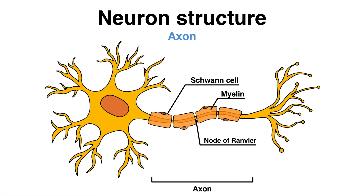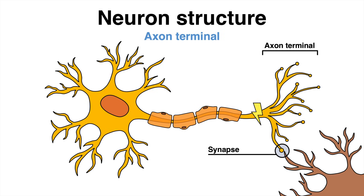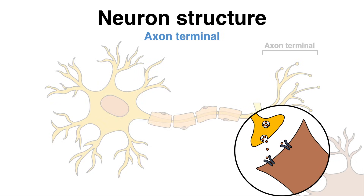Finally, the action potential reaches the axon terminal, which is the end of the axon that forms a synapse. The synapse is the junction between the axon terminal of one neuron and the dendrites or cell body of another neuron or target cell.